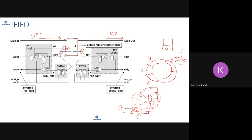The write pointer points to the address where you want to write, and the read pointer points to the address where you are reading. If these are at least one or two addresses separated from each other, you get the same behavior as with the enable approach — you are not reading and writing from the same address simultaneously.